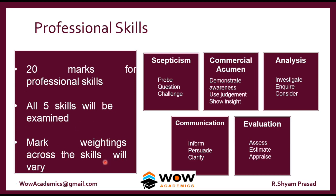The marks are not equally allocated as 4, 4, 4, 4, and 4. Somewhere it can be a little bit higher and a little bit lower. For example, skepticism in some papers can be 6 marks, commercial acumen can be 2, and analysis can be 4. Mark weightings across the skills will vary, so the 20 marks will not be split equally across all five skills.